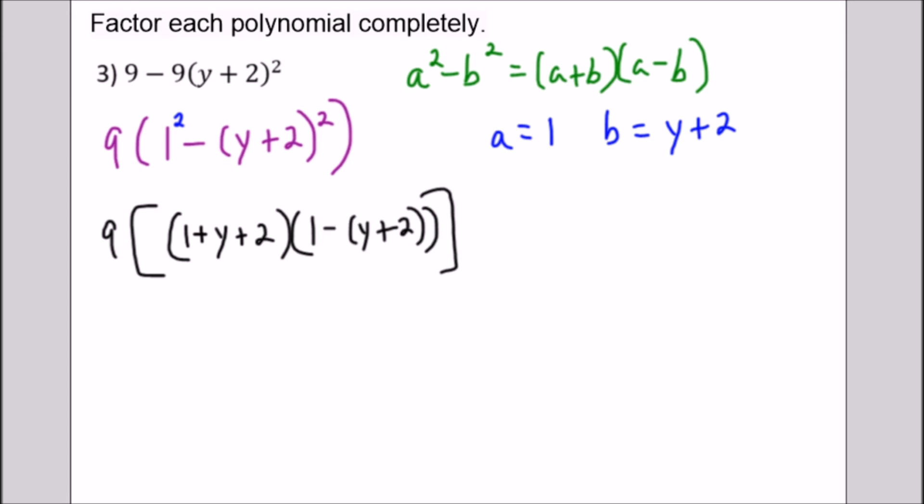But a sneaky step here to look out for is that you have to distribute this negative. Or you could have seen it here that -b, I could have just taken this and multiplied both sides by negative 1. And I would have -b = -y - 2. But this will give us the same result doing it this way.